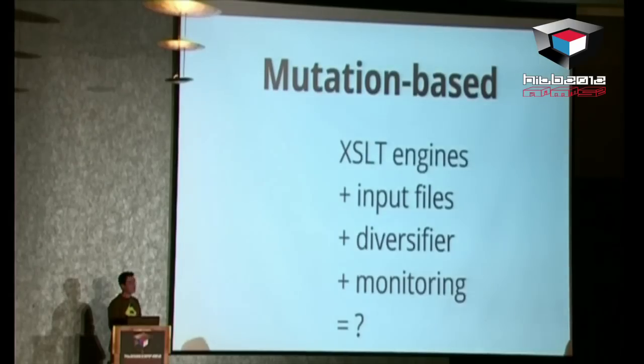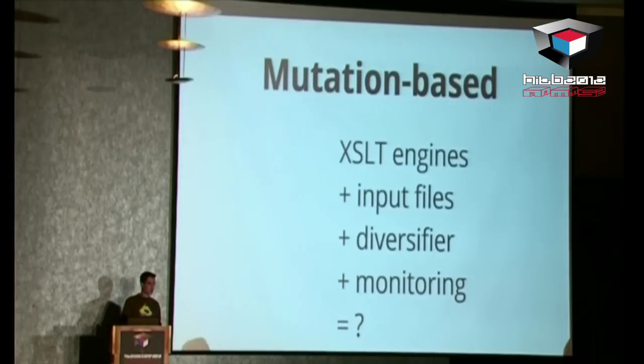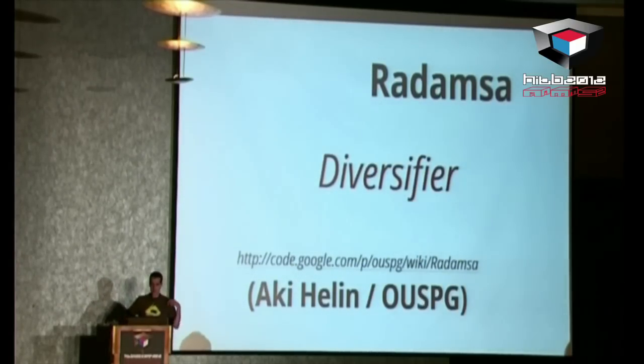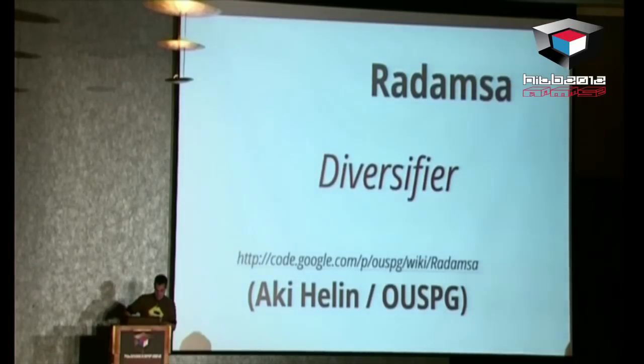For the fuzzing part, I did some mutation-based fuzzing on XSLT. It's very simple: you take a lot of XSLT engines, a lot of input files found on Google, in bug trackers, or in conformance verification software. You use a diversifier — a tool that takes an input file and produces several output files with small modifications — and do some monitoring looking for bugs. The diversifier I used is RADAMSA, which is very, very cool. I generally give it 5,000 files and ask for 1 billion outputs, then feed them to the parser.